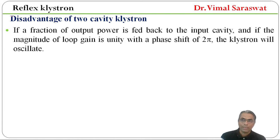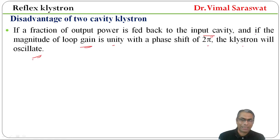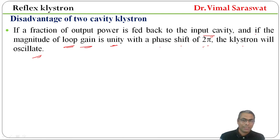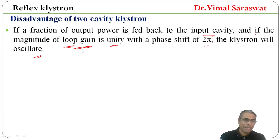If a fraction of the output power is fed back to the input cavity and if the magnitude of loop gain is unity with a phase shift of 2π, the klystron will oscillate. So, the condition for klystron oscillation is that the magnitude of loop gain is unity with a phase shift of 2π.